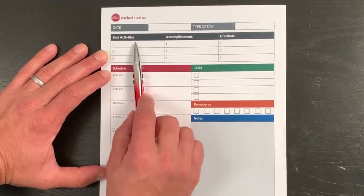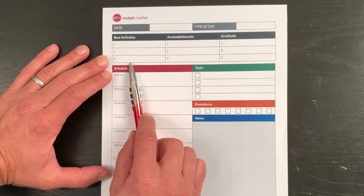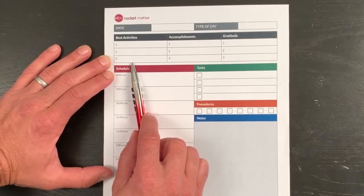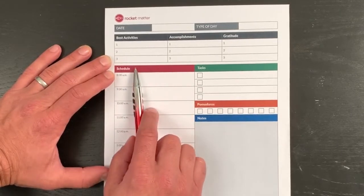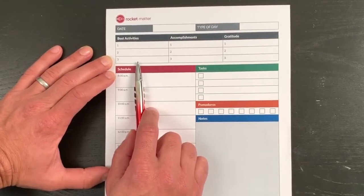Then I have my best activities. These are the top three things that I want to accomplish during the day that are really based on my quarterly priorities, which then tie into my yearly priorities. I'm really trying to move the ball forward with my best activities here, and it really adds some intention to my day.